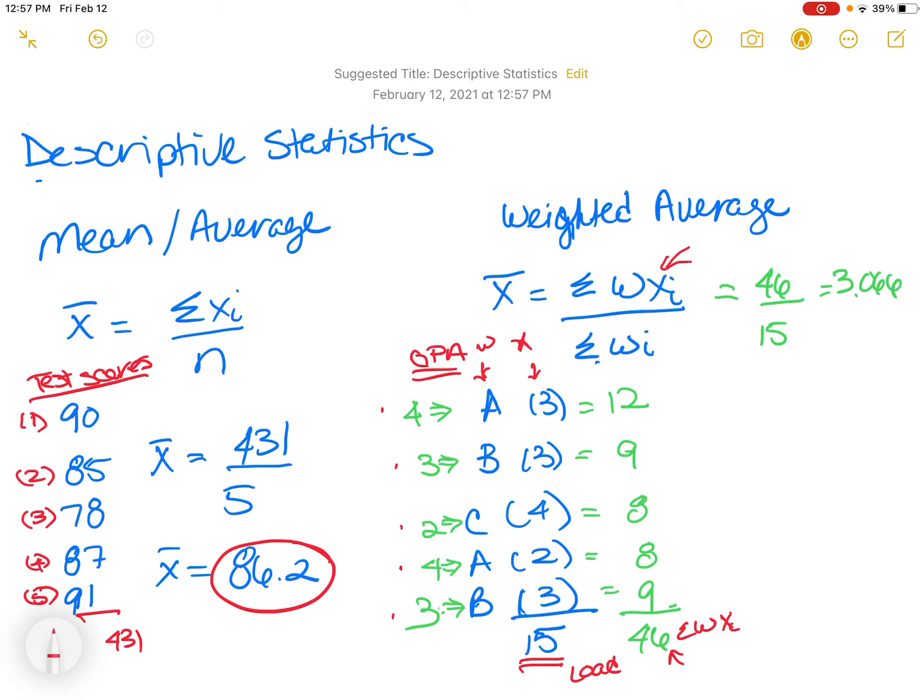So 46 divided by the sum of your, oh I think I switched them, my bad. The sum of your weights. Pardon me, so sorry, that's the W and that's the X. And the sum of your weights is 15. And then when I divide my 46 by my 15, it gives me a 3.066. So you actually ended up with a 3.1 for the semester for your GPA. Not bad.